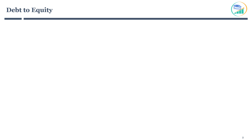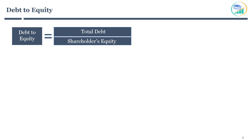Let's start with the first ratio: debt to equity. It is very straightforward but the most important one. Debt to equity is calculated as total debt of the company divided by shareholders' equity. You will find the company's long-term debt and equity in the balance sheet. In short, it measures the amount of total debt capital with respect to total equity capital.